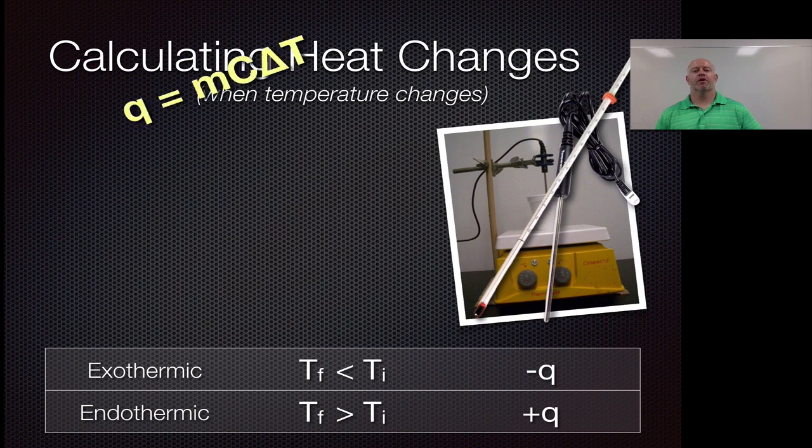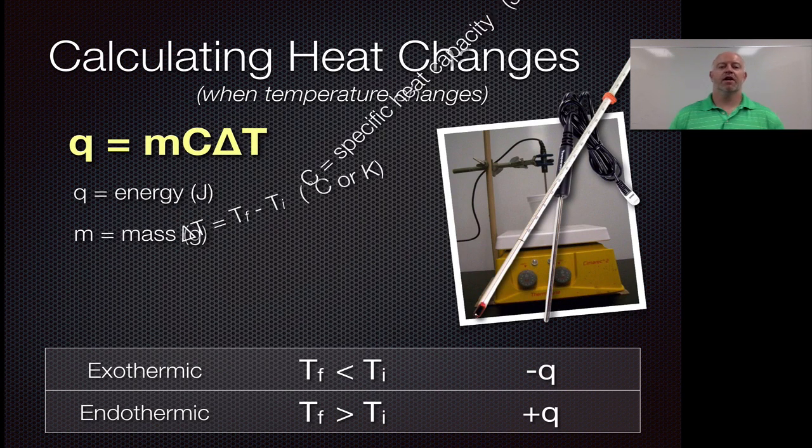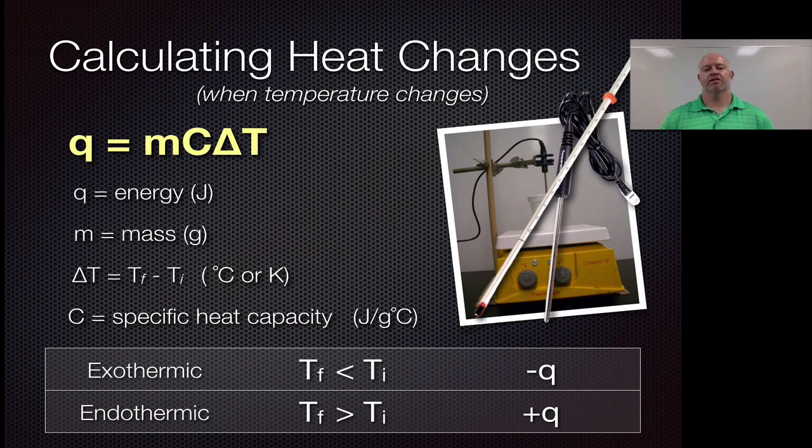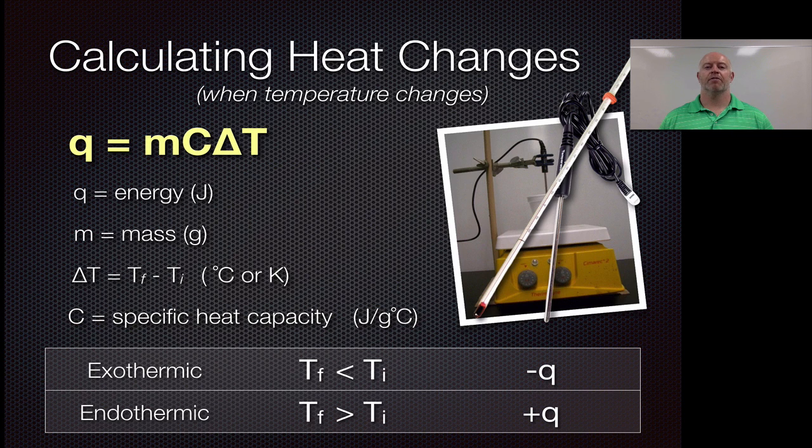So when we do some calculations here, we want to make sure that we have an equation that works with it, and that equation that we use is Q. Now, Q is our measure of energy. It's very similar to delta H that we talked about before, but in this case, because we're not talking about an enthalpy change within a chemical reaction, we designate it Q instead. So Q is our energy in joules, M is our mass, C, capital C is our specific heat capacity, and then we have a change in temperature, delta T.